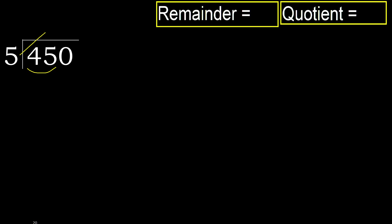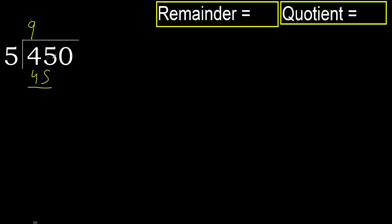5 multiplied by 9 is 45, which is not greater. 45 minus 45 equals 0.